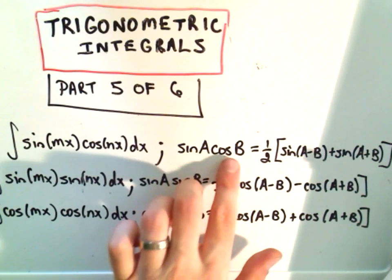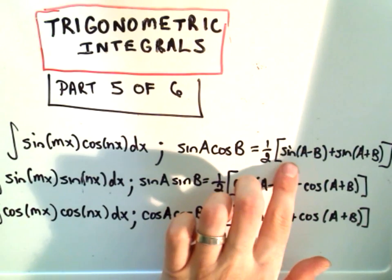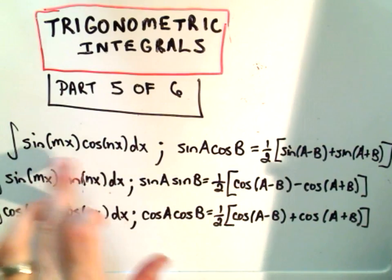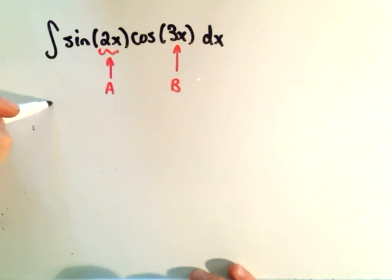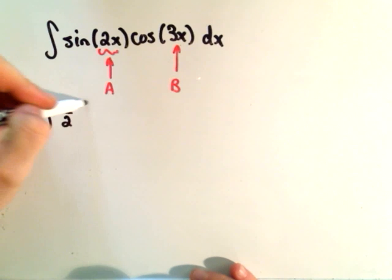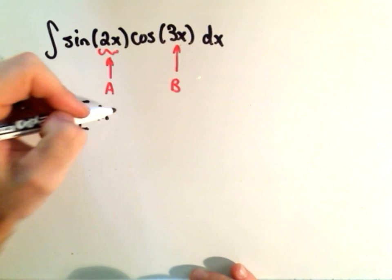It says if you have sine of something times cosine of something, you take sine of the difference of the first minus the second, and sine of the addition. So when I do this, it says this is going to turn into one half sine of a minus b,